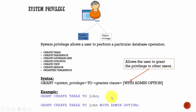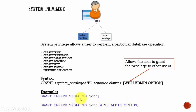To repeat: if the DBA grants a privilege WITH ADMIN OPTION, John can use that privilege himself and also grant it to other users.